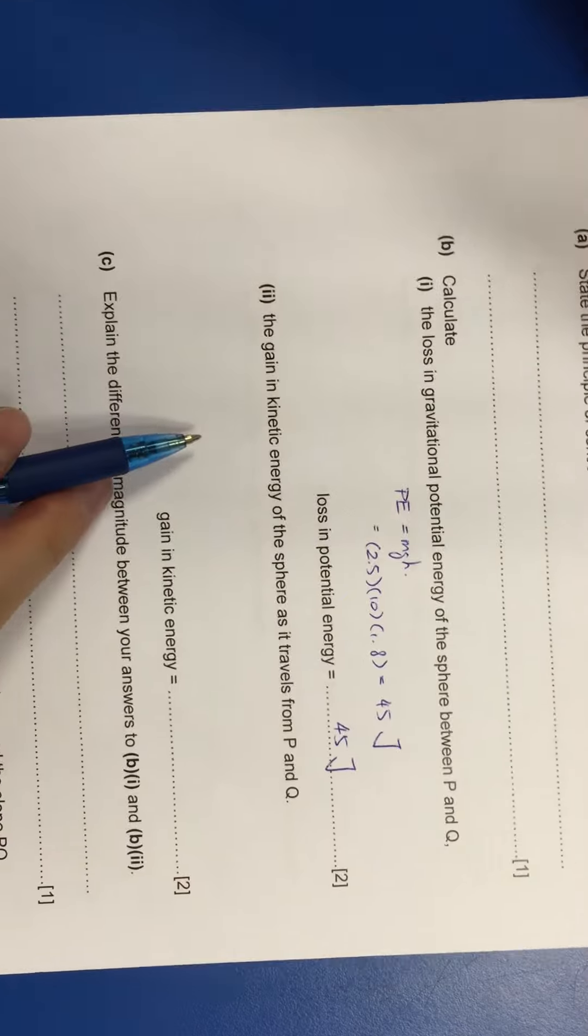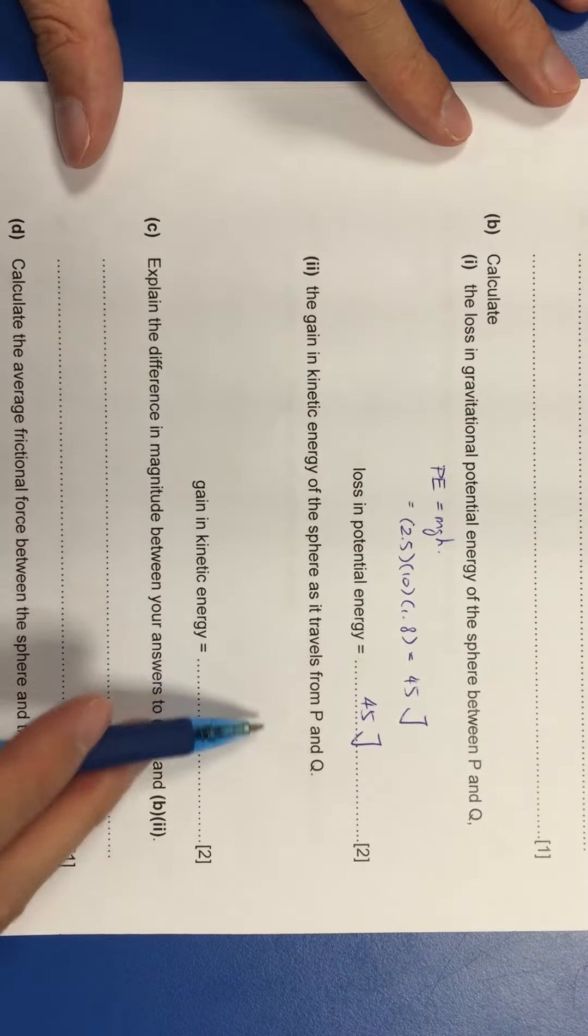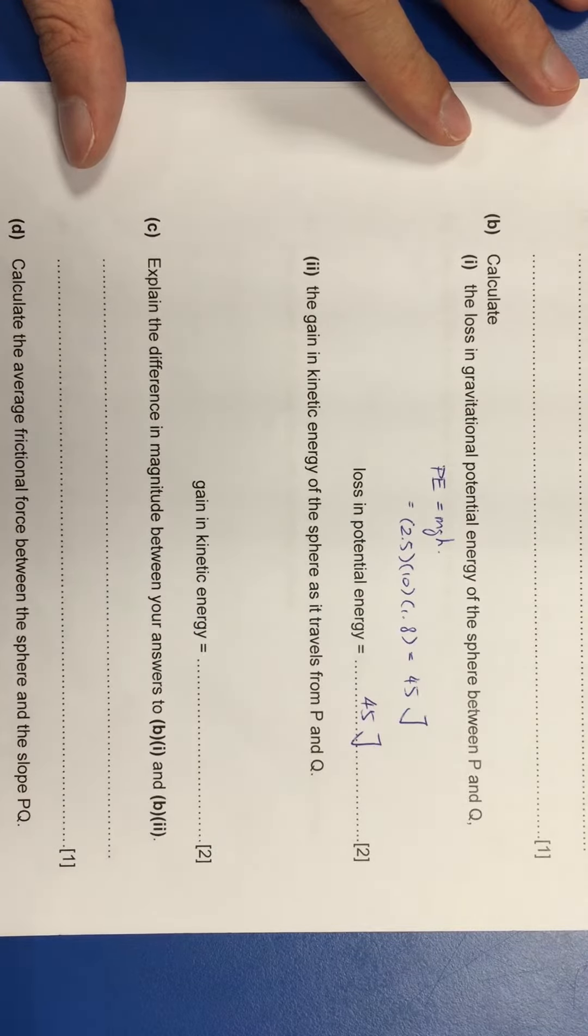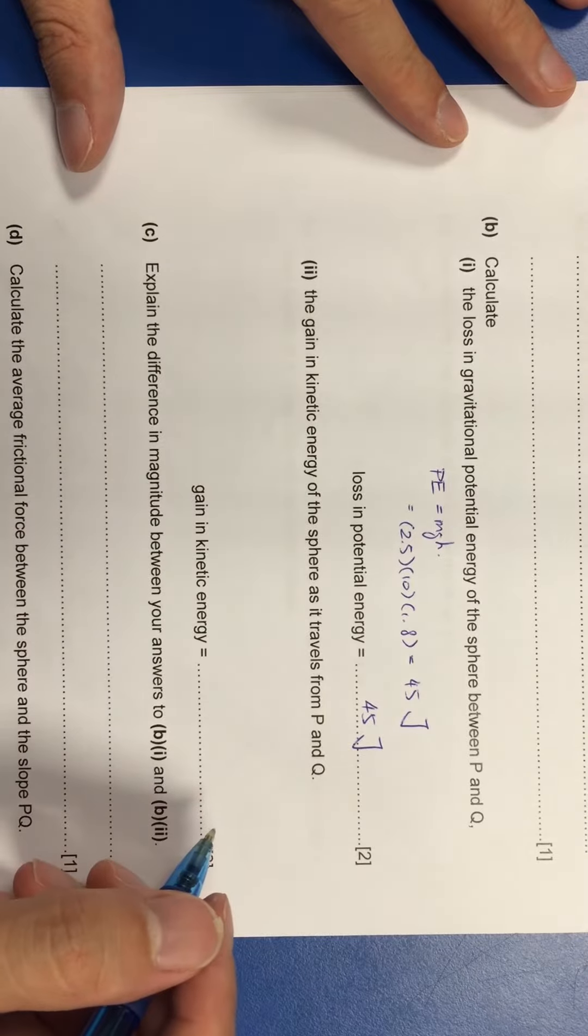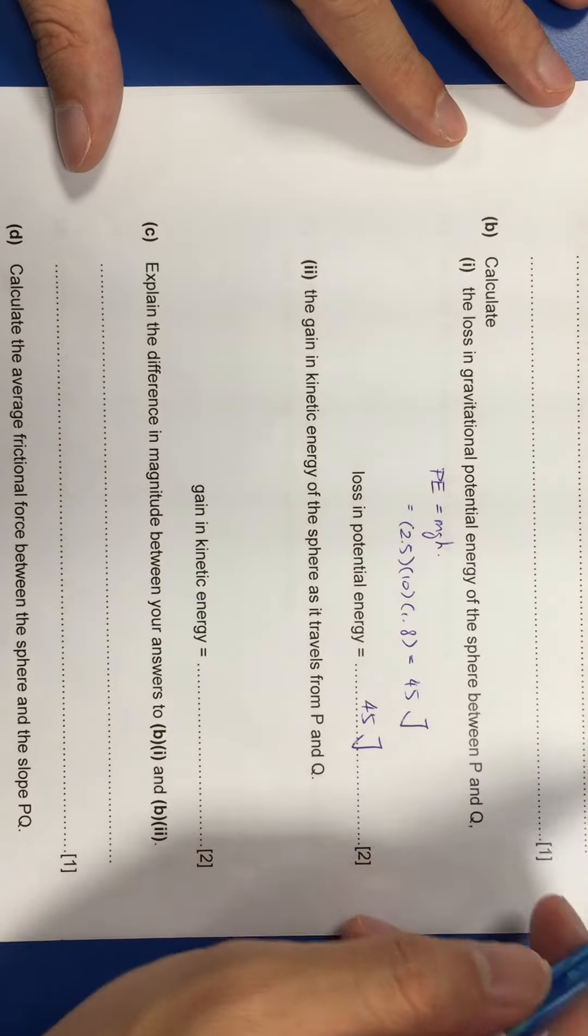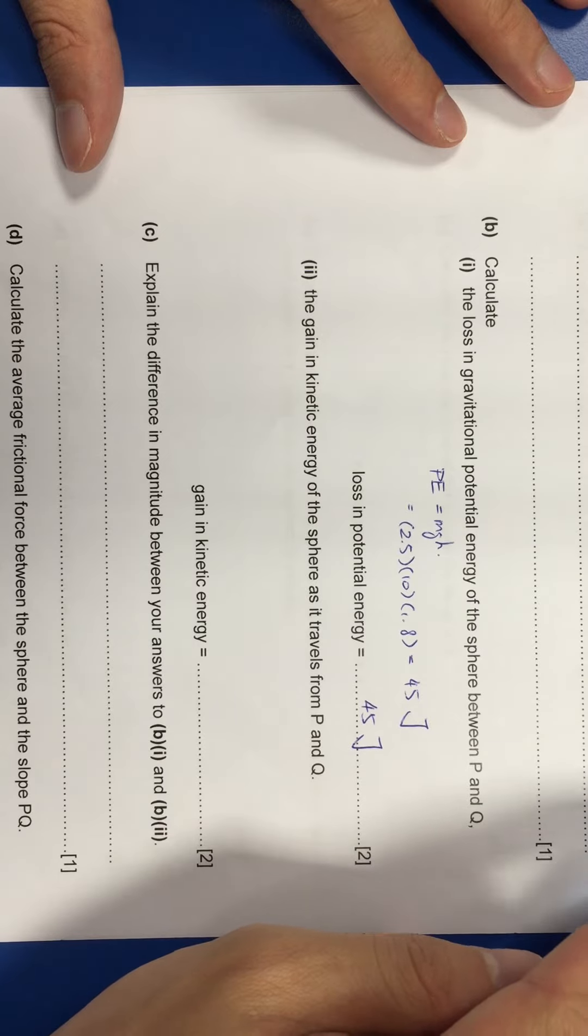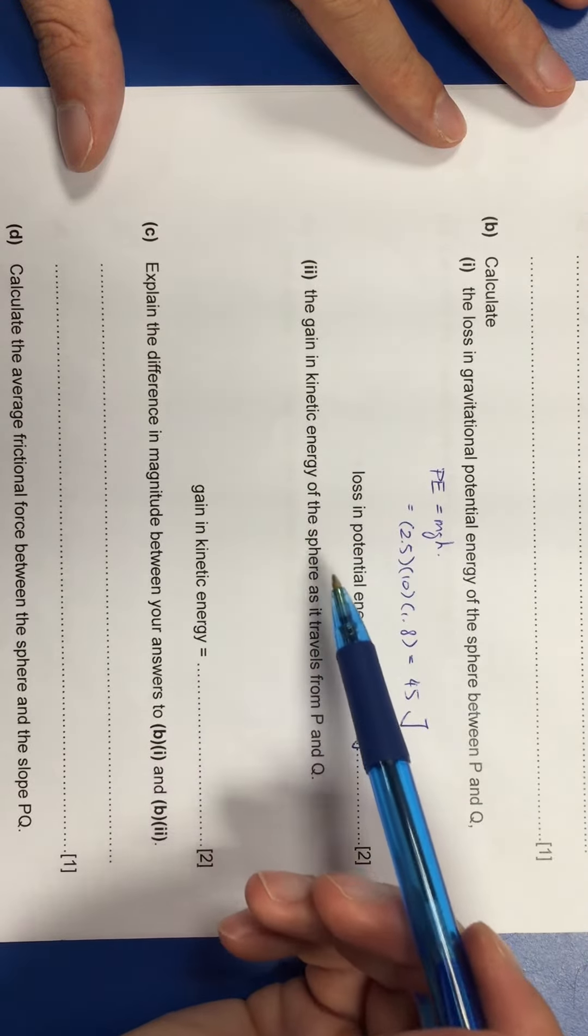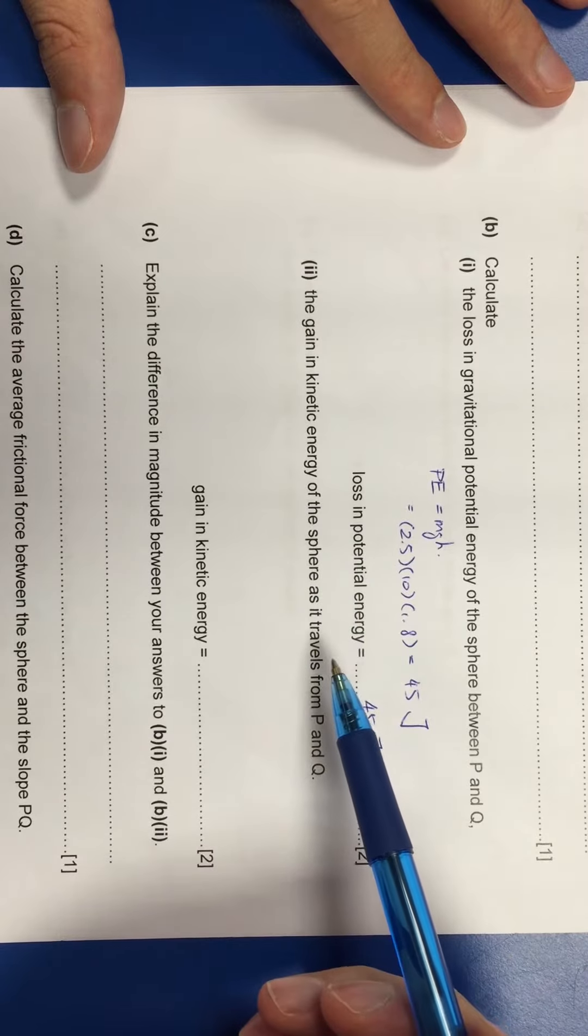Then followed by the gain in KE of the sphere as it travels from P to Q. So the loss of PE must be equal to the gain in KE, right? Wait a minute. Is there any tricks? Let me see. Gain in KE must be the loss of PE.